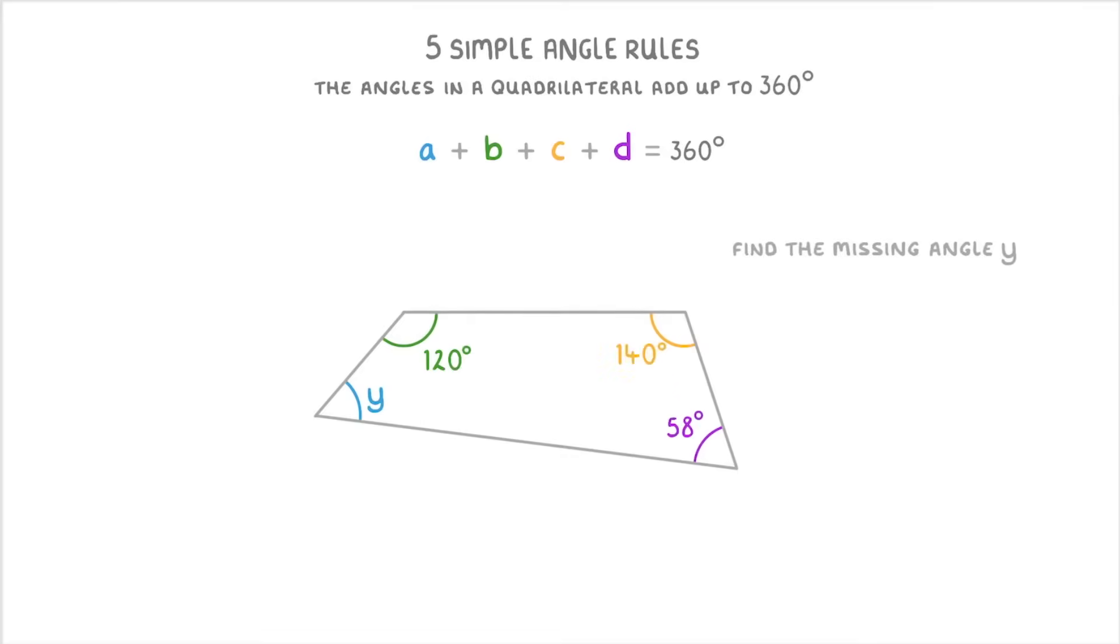So if we had this question here where we're trying to find out the missing angle y, we could say that 120 plus 140 plus 58 plus y equals 360. Or if we simplify it, then 318 plus y equals 360. Then we can just subtract 318 from both sides to find that y is 42 degrees.